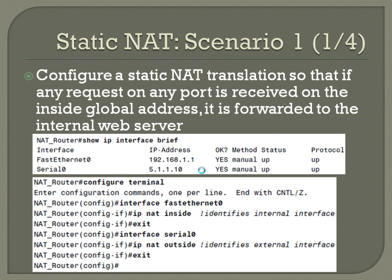Config T, interface FastEthernet 0, IP NAT inside, exit, interface serial 0, IP NAT outside, exit. That identifies your inside and your outside NAT interfaces, and is a paramount configuration line before NAT is going to be able to work properly.